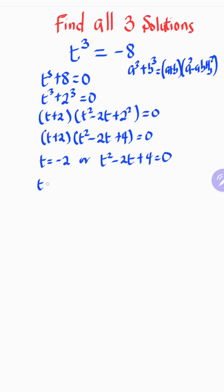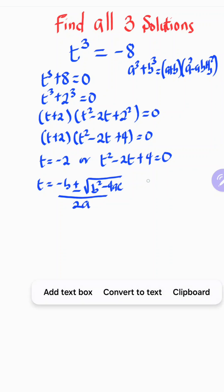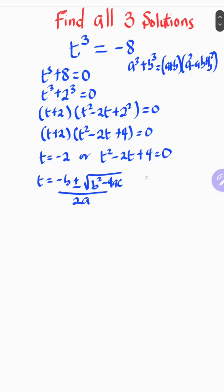To solve the quadratic equation, we use the quadratic formula: t equals negative b plus or minus the square root of b squared minus four ac, all divided by two a. From our equation, a equals one, b equals negative two, and c equals four.